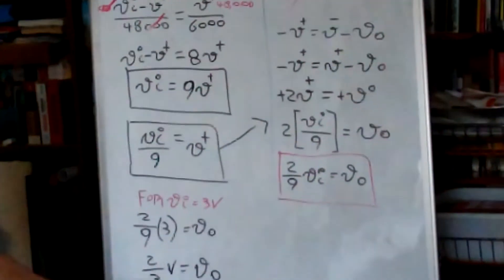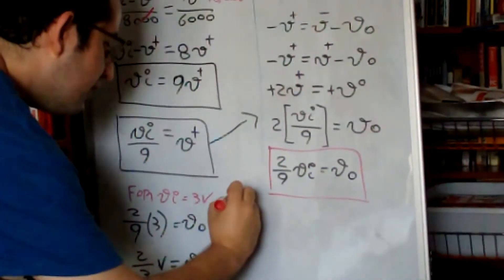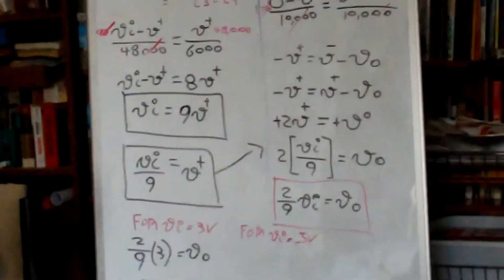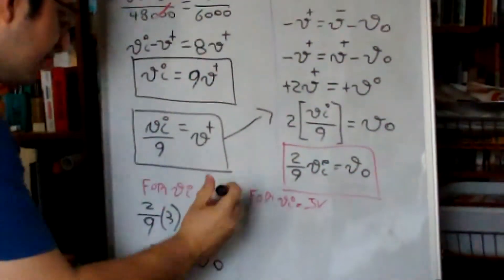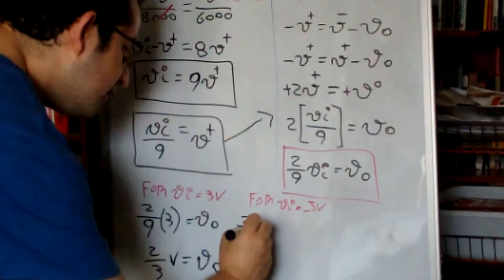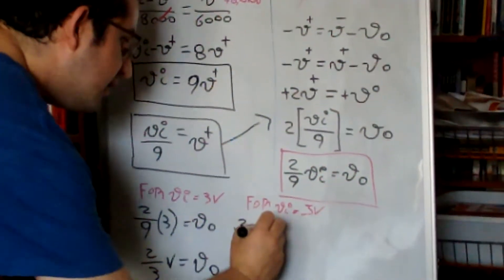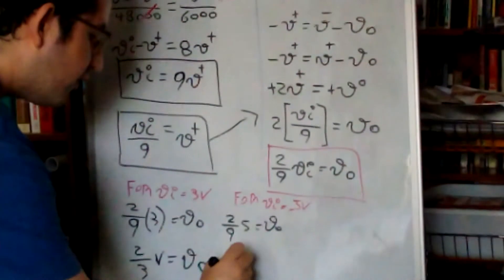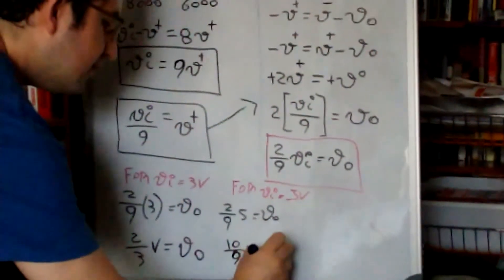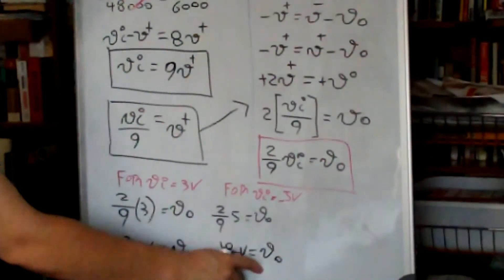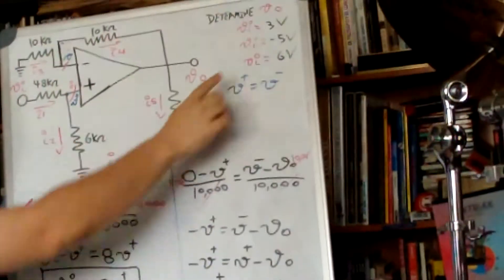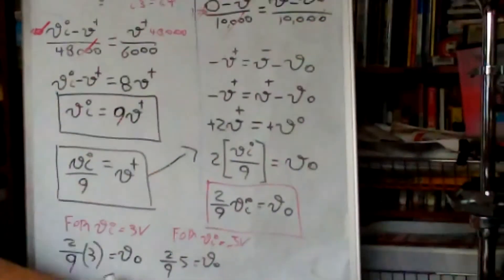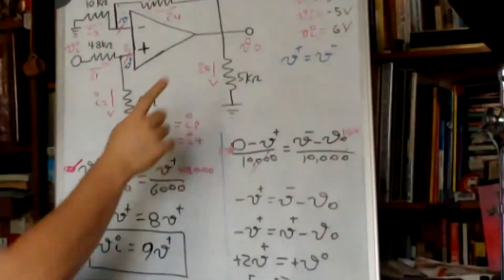Now for V input equal to negative 5 volts, we plug in: (2/9) times negative 5 equals V out, which gives negative 10/9 volts. So the output is negative 10/9 volts — a negative potential.